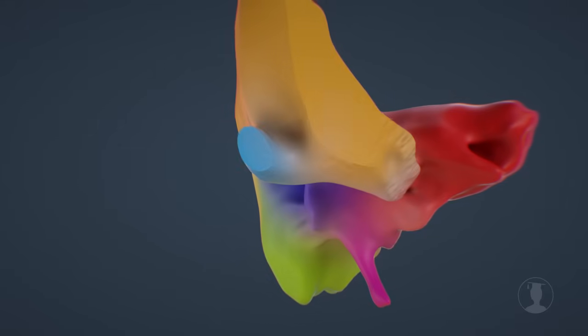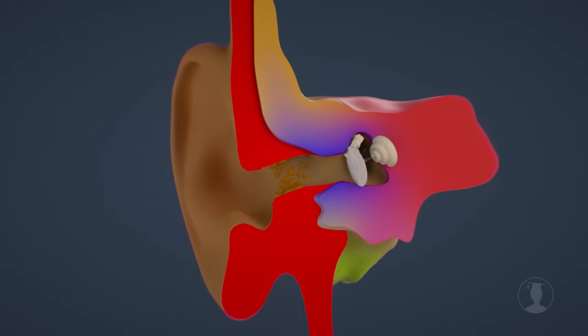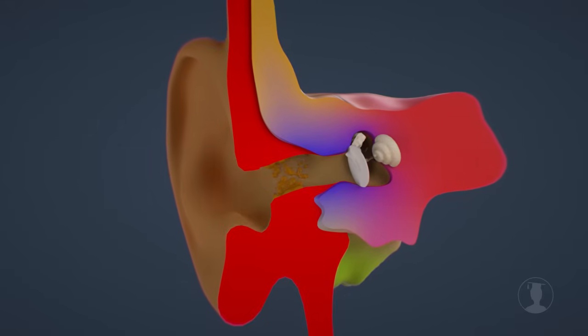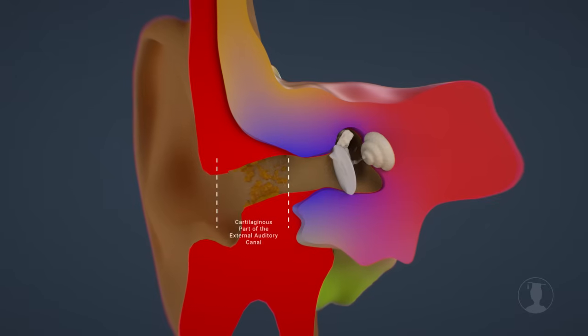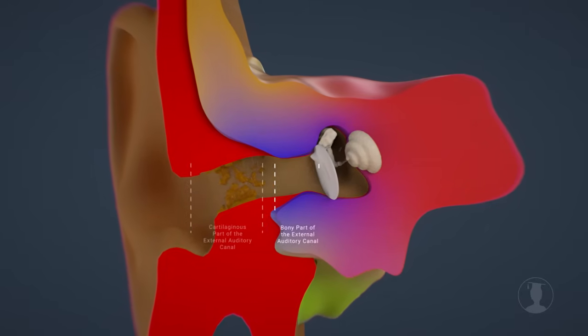Let's now take a look inside the temporal bone to explore the inner structures. The external auditory canal has a cartilaginous portion, which is equipped with hairs and earwax-forming glands. Furthermore, the canal possesses a bony part.